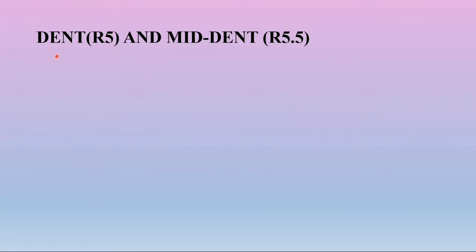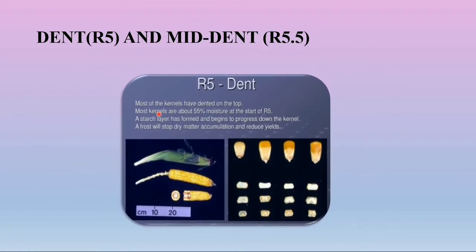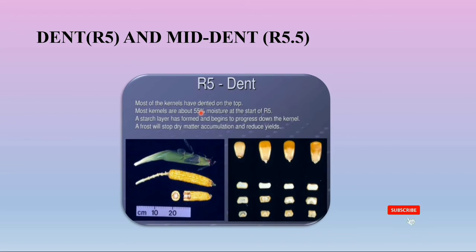Now let us see about the dough stage (R4) and mid-dent stage. The dent stage (R5) is when most kernels have dented on the top and generally occurs 35 to 42 days after silking; the cob is a dark red color on the majority of hybrids. The mid-dent stage (R5.5) is often referred to as the half milk line. As the kernels are drying down, a white layer of starch forms beginning at the top of the kernel and progresses toward the cob. When this hard layer reaches halfway down the kernel, it is considered to be at the half milk line stage.